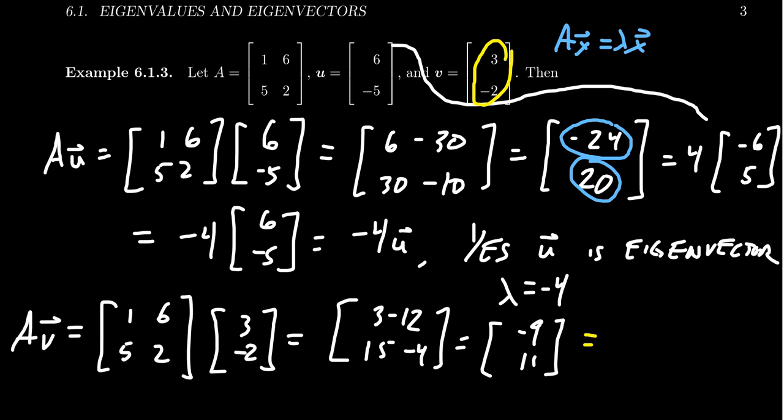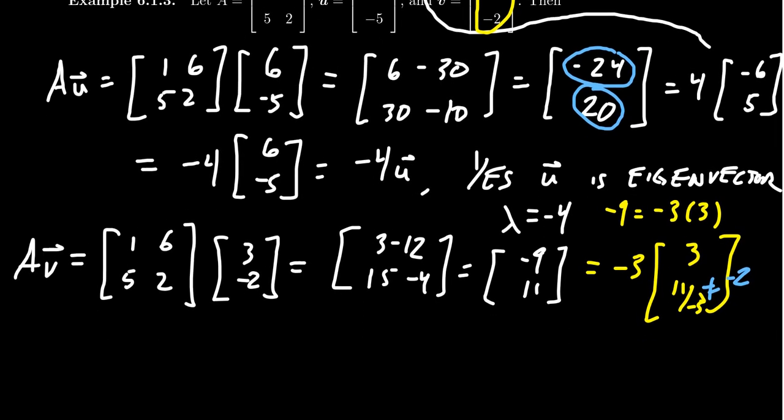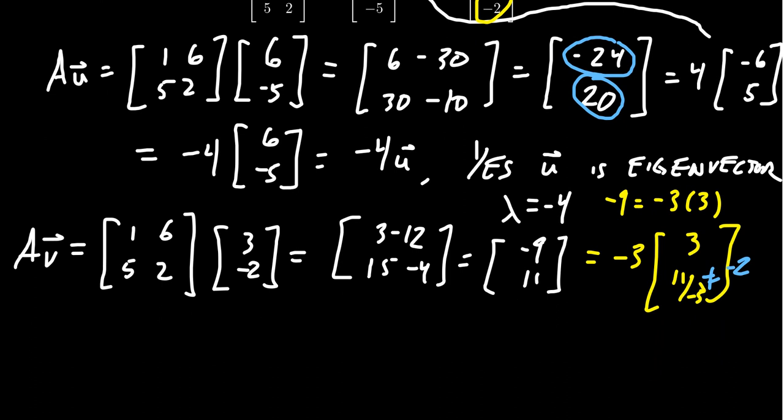Well, notice that -9 would have to factor as -3 times 3. So if this is some eigenthing, we'd have to pull out -3, leaving behind a 3. But when we factor out -3 from 11, we get 11 over -3. That is not going to simplify to be a -2. And so to answer the question here, we actually would have to reply in the negative.